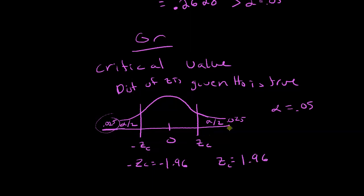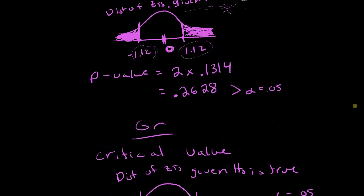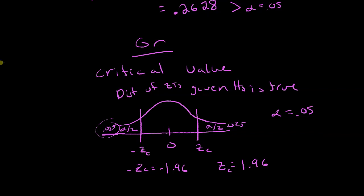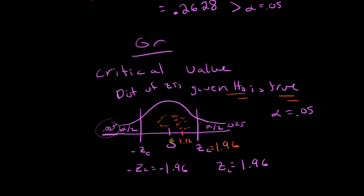If our test statistic falls in either tail beyond ±1.96, we would reject the null hypothesis. Our test statistic is 1.12, which is not greater than 1.96 and not less than −1.96 — it falls in the region where the null hypothesis seems reasonable. So we fail to reject the null hypothesis; the test statistic is not in the rejection regions defined by these critical values.